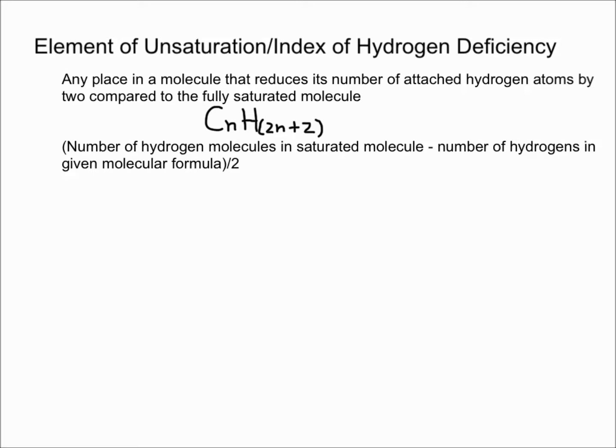To calculate the element of unsaturation, or index of hydrogen deficiency, you're going to take the number of hydrogen molecules in the saturated molecule.